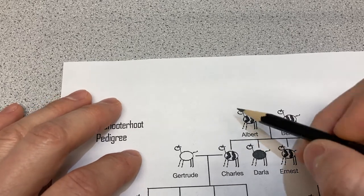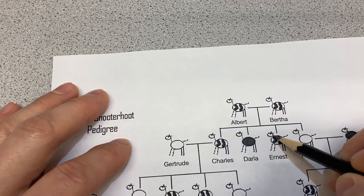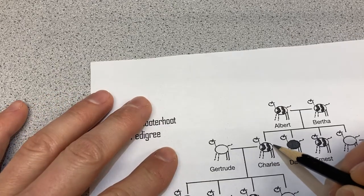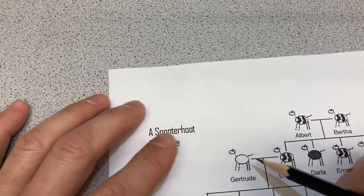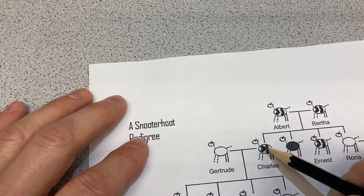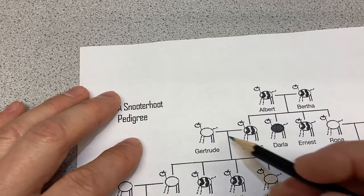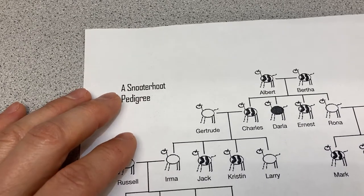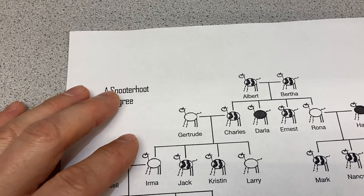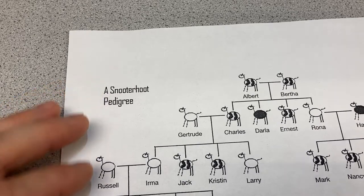They've got some very specific characteristics. You'll notice that some of them have necks and some have no necks. Some have tails and some have no tails. Some have white coat color, some are black coat color, and some are striped or spotted coat color — three different possibilities for coat color. Those are the main characteristics you're going to look at.